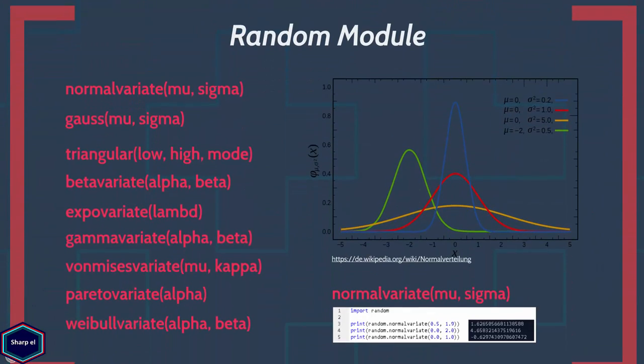These statistical distribution based functions generate random numbers based on different distributions. I will not cover all these functions because they require extra knowledge of different distributions and even more complex examples for understanding them. But let's look at the normal distribution function.